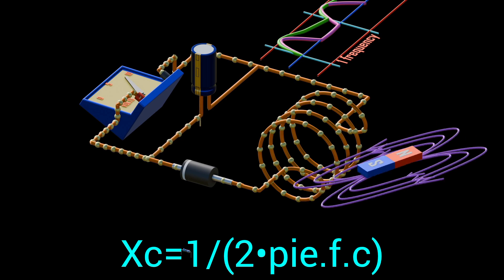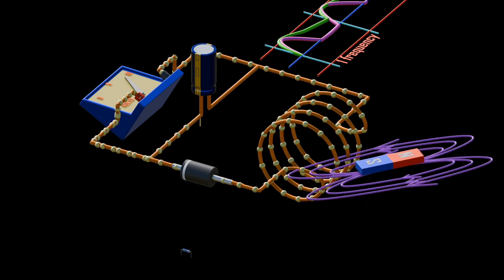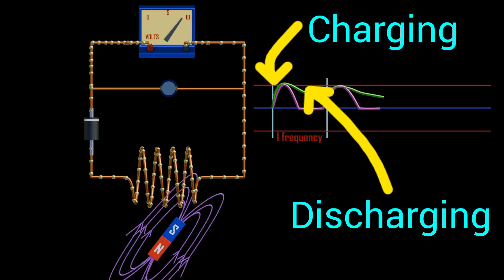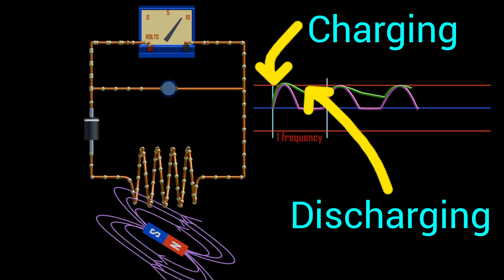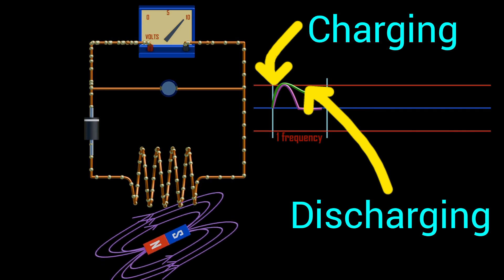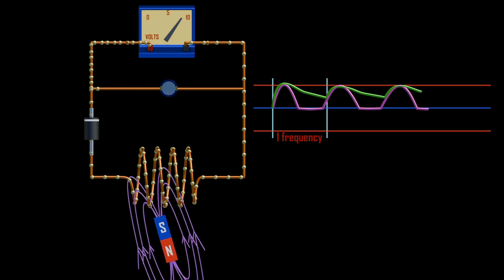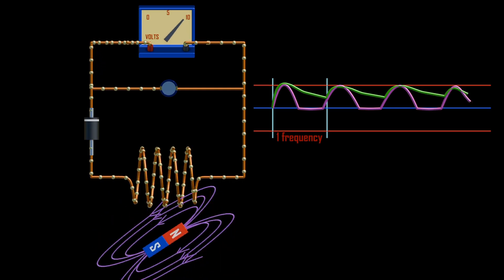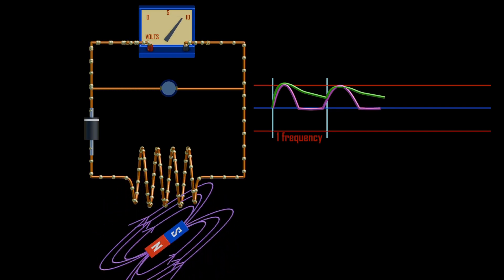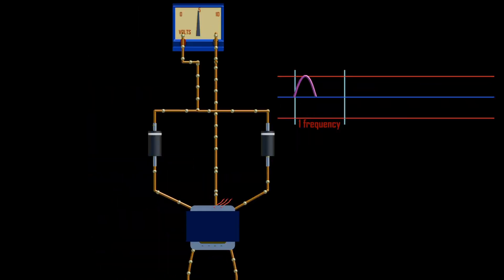Therefore, to obtain the best possible filtering, the capacitor should be as large as possible. Another consideration is the charging and discharging time of the capacitor — it should charge fast and discharge slowly. To obtain steady DC output, the capacitor must charge almost instantaneously to the value of the applied voltage. But in this half-wave rectifier, there is a very large gap. Therefore, we can improve our circuit instead of having one diode.